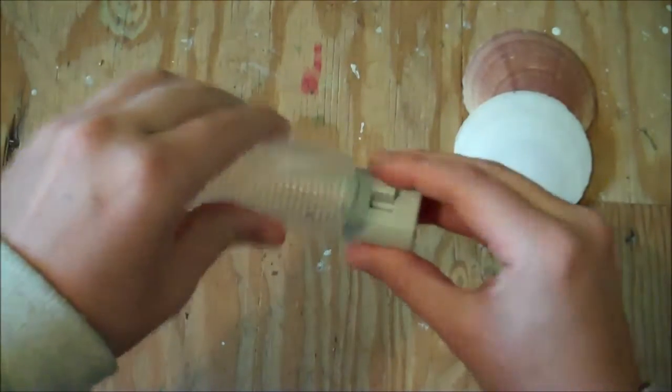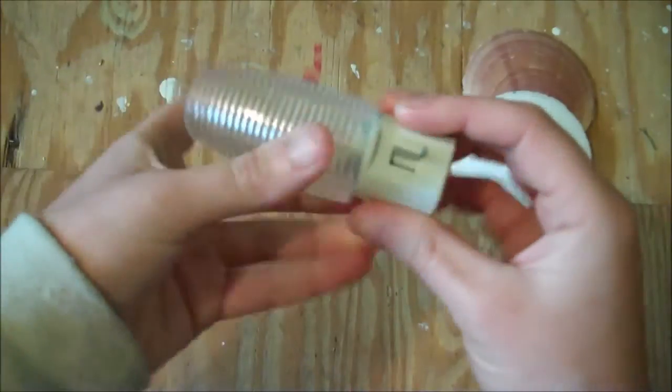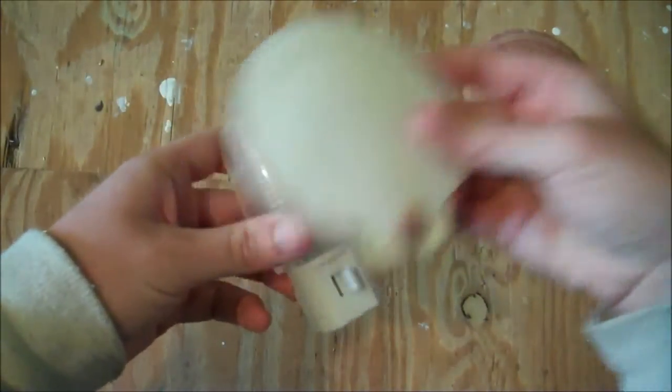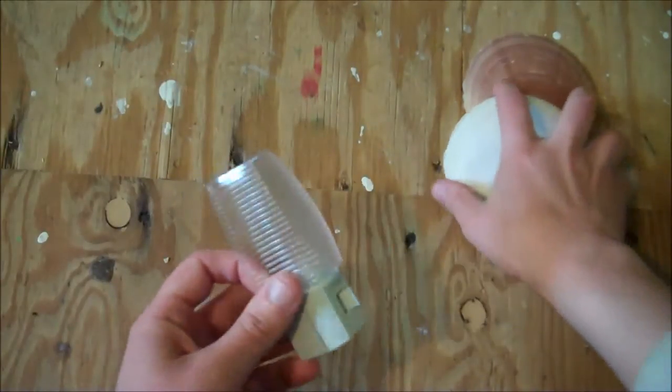So then you want to get yourself a nightlight. You want to make sure this is one of the kind with a flat plastic surface because you'll need that to attach the shell to. You can basically be hot gluing that onto the flat plastic surface. So just make sure it can be a little round, but make sure it's mostly flat.